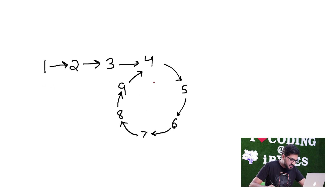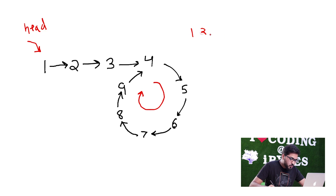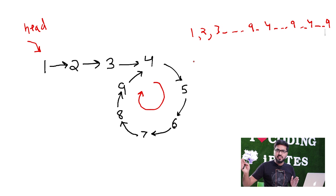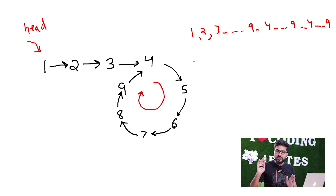As you can see in this linked list, there is a loop. If I start from the head and start printing, then 1, 2, 3 will print. After that, 4 starts, then 9 will print, then 4 again, then 9 again — and so on, infinitely. It will never stop; the print will go on infinitely.